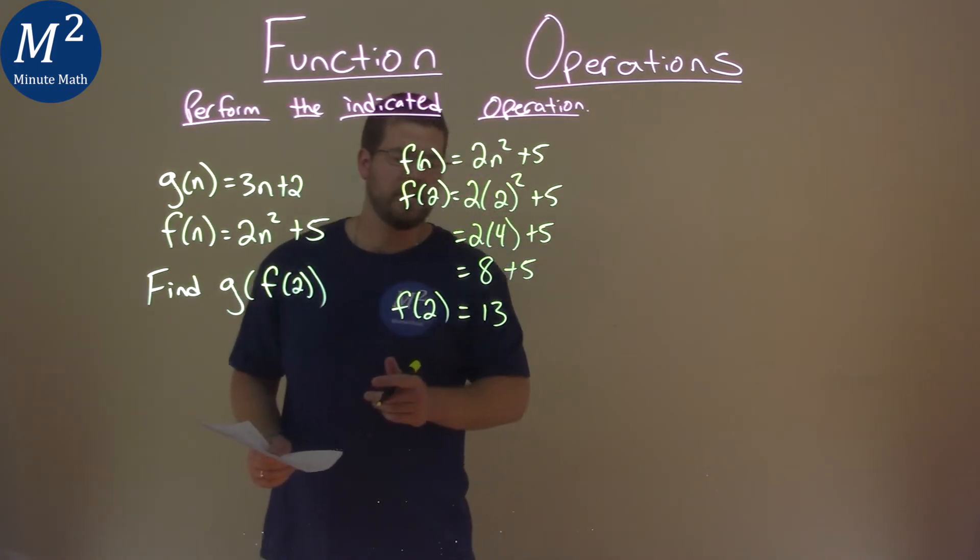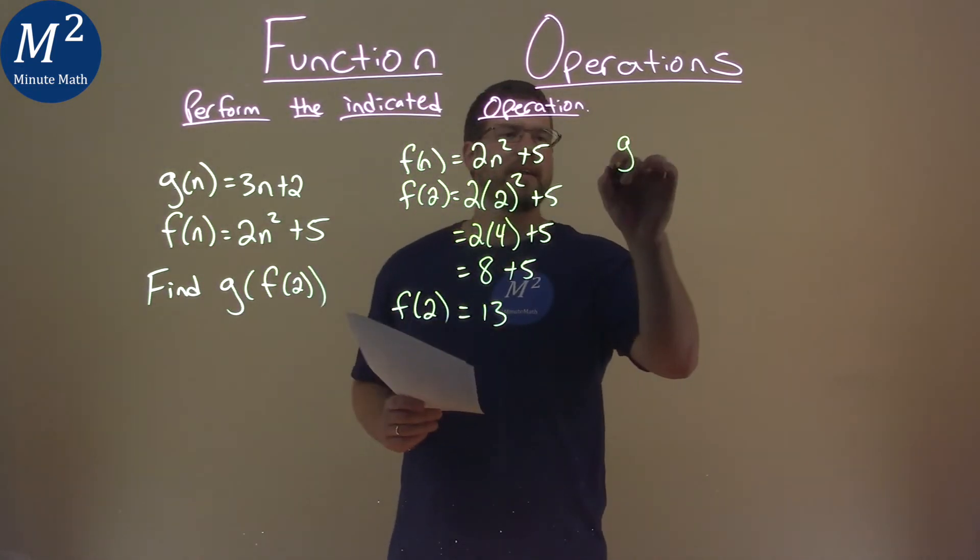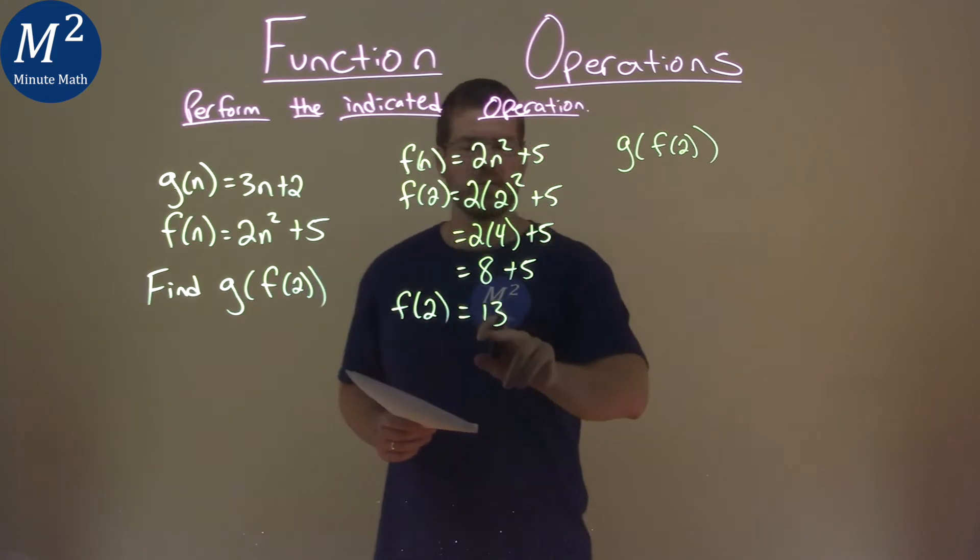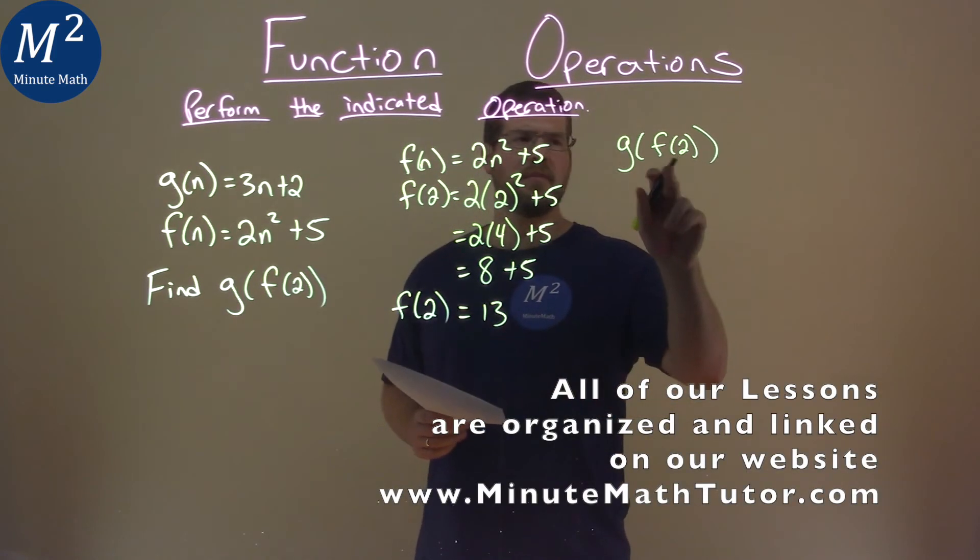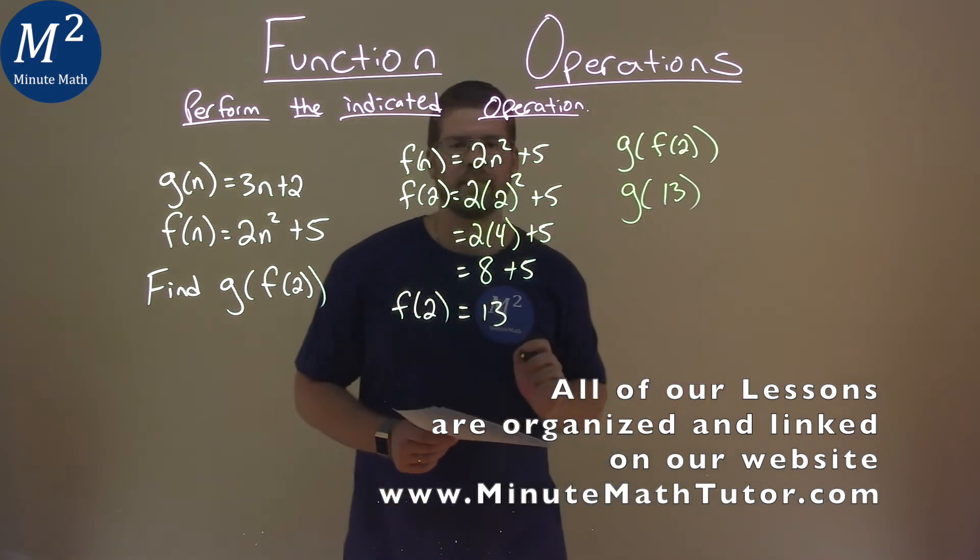Now, f(2) = 13 and we need to find g(f(2)). If f(2) is 13, instead of f(2) we put 13 in. So we have g(13).